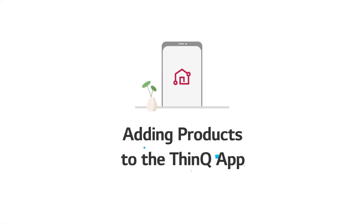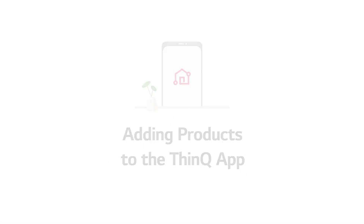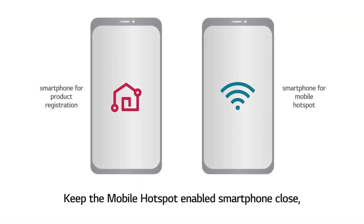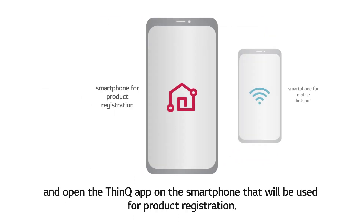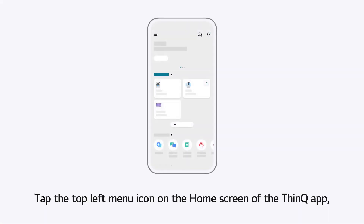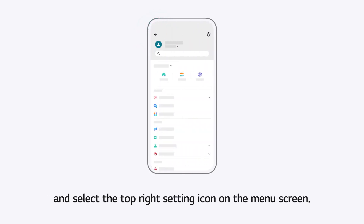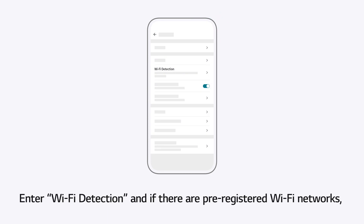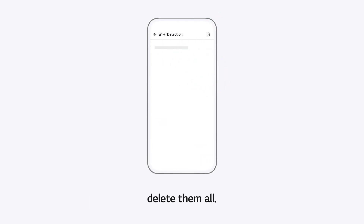Adding Products to the ThinQ App. Keep the Mobile Hotspot enabled smartphone close and open the ThinQ App on the smartphone that will be used for product registration. Tap the top left menu icon on the home screen of the ThinQ App and select the top right setting icon on the menu screen. Enter Wi-Fi Detection and if there are pre-registered Wi-Fi networks, delete them all.